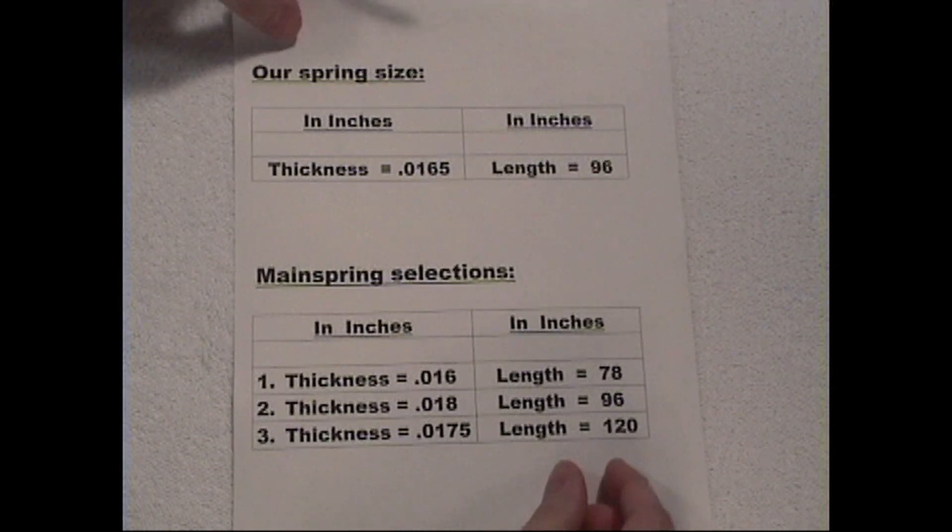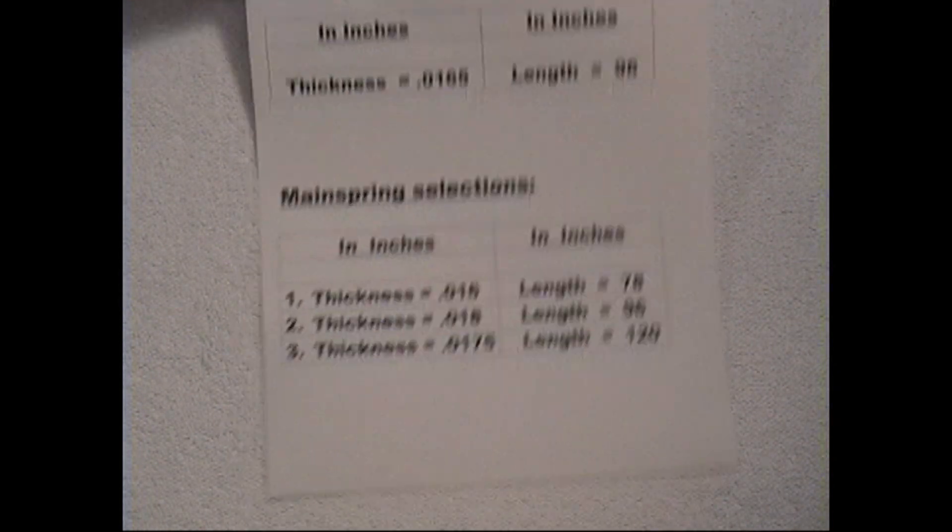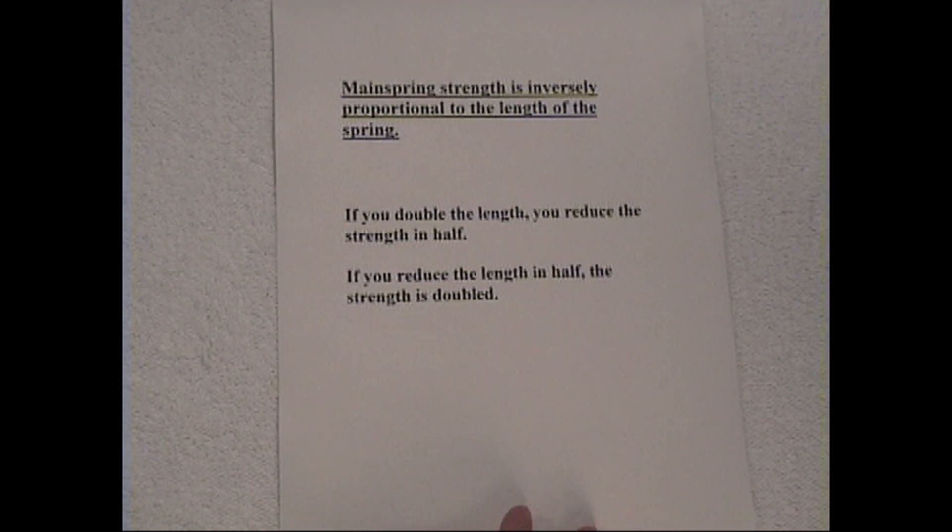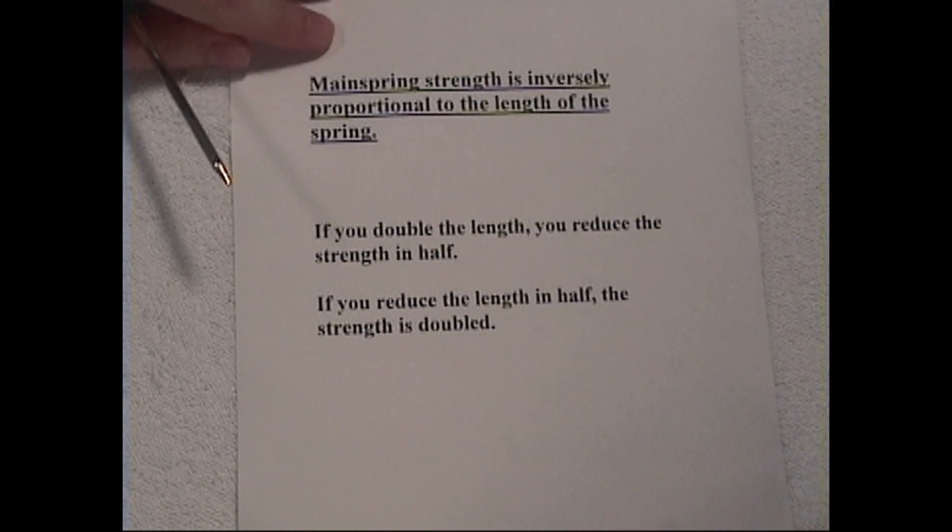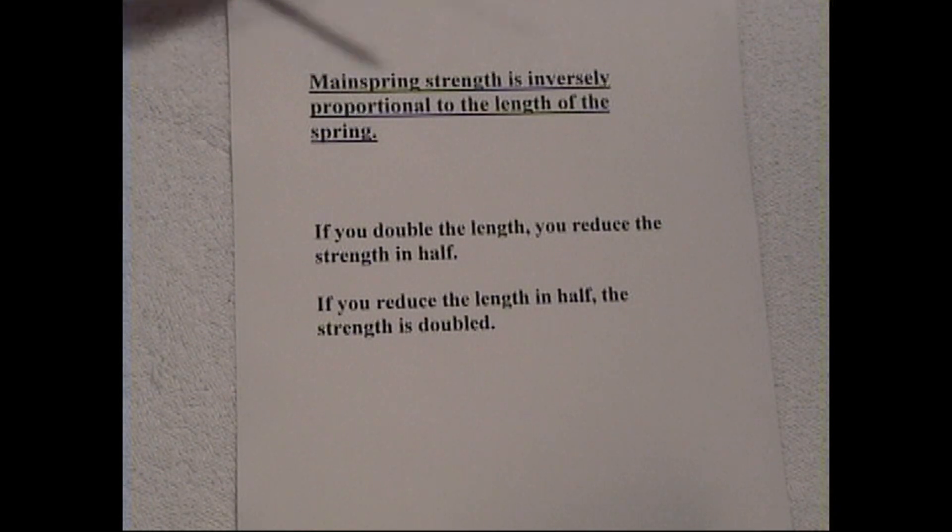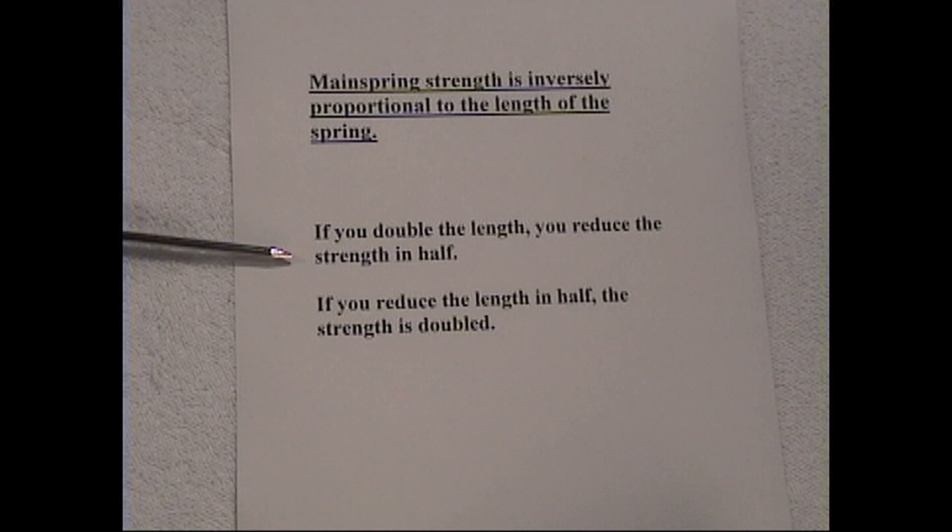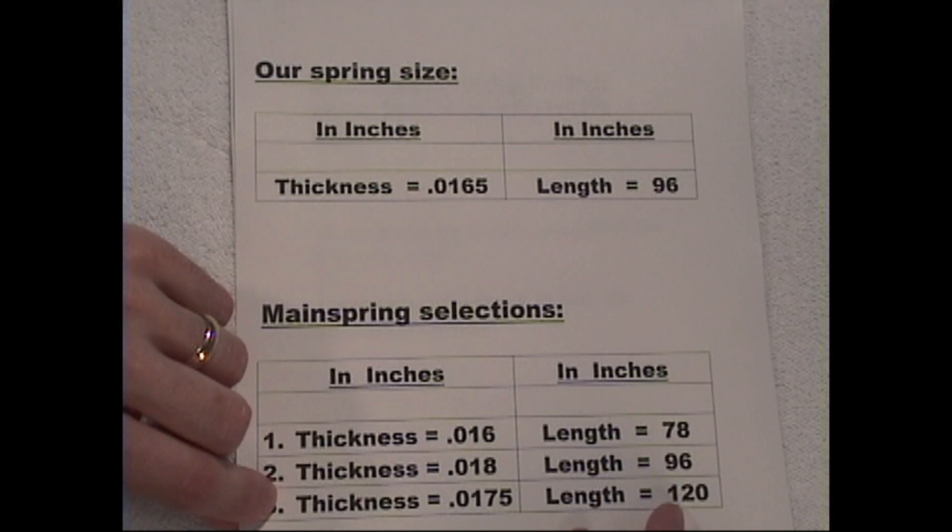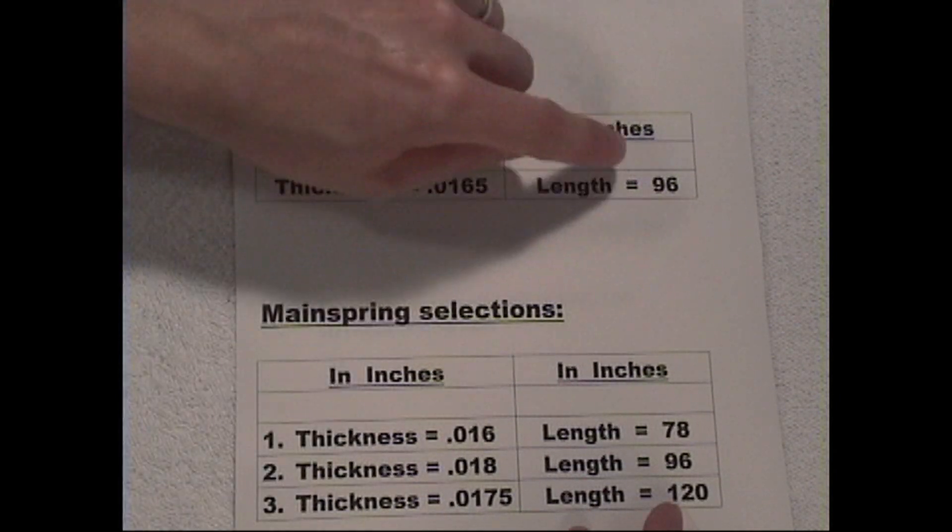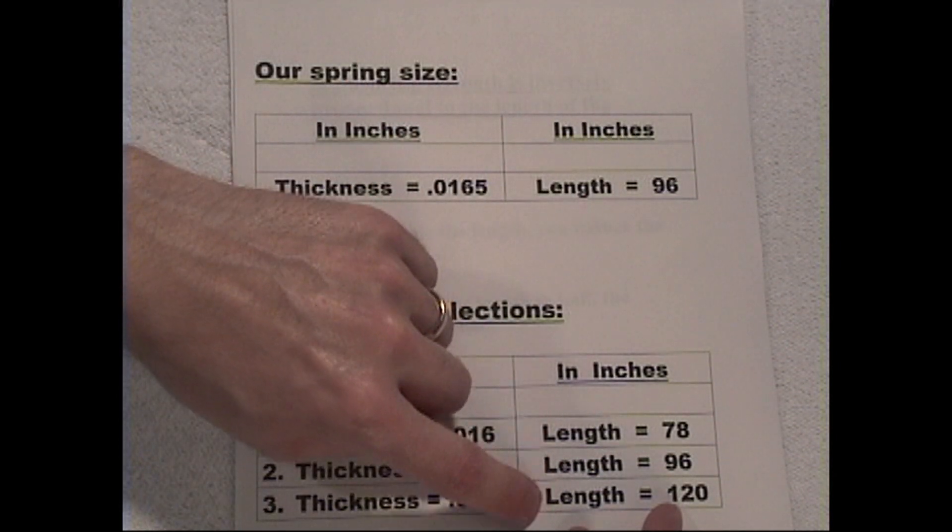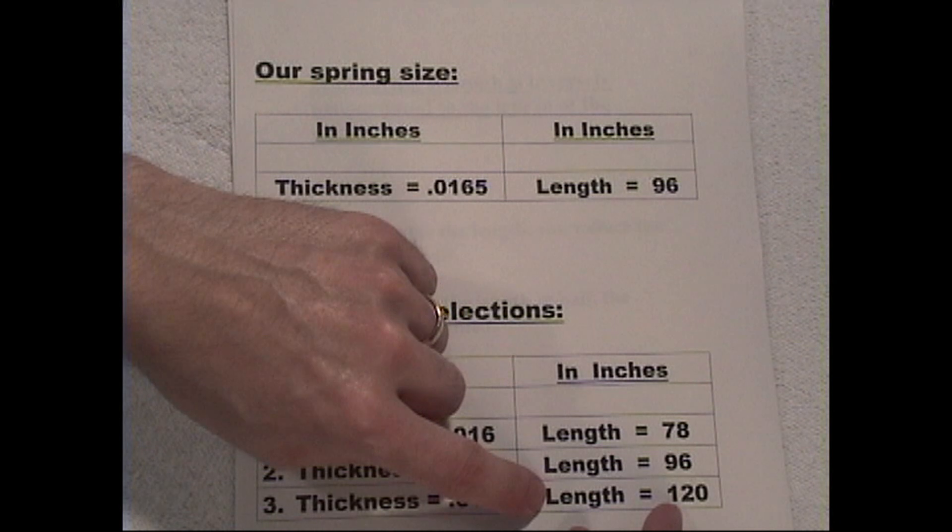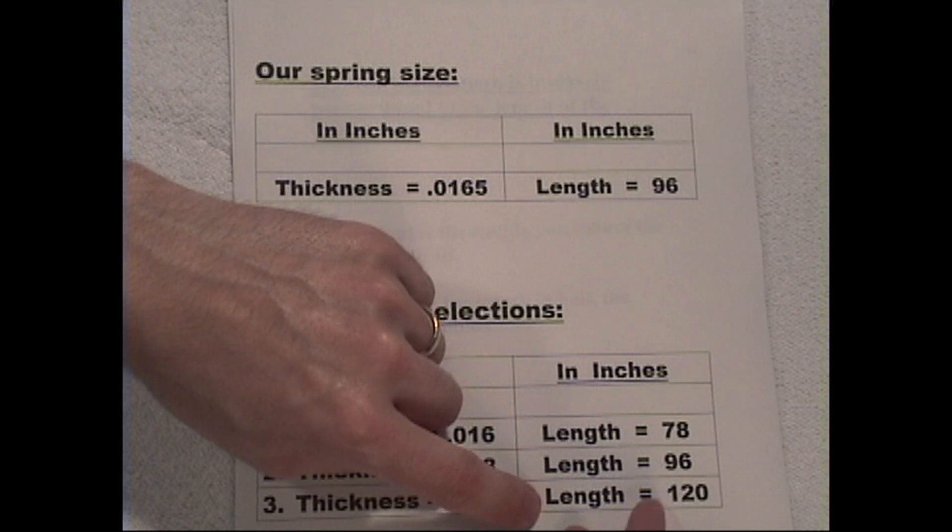Here's some important rules that we need to follow when determining these different variations. Mainspring length is inversely proportional to the length of the spring. That means that if you double the length, you reduce the strength in half. So here we're exceeding the length, one hundred twenty inches versus ninety-six, which means that this longer spring, if everything else equal, will be weaker because it is longer.